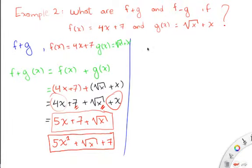Let's go ahead and take a look at this example next. Well, it's the same example, but in this case they want us to find f minus g, using the same functions, right? So I have that f of x equals 4x plus 7, and g of x equals square root of x plus x.